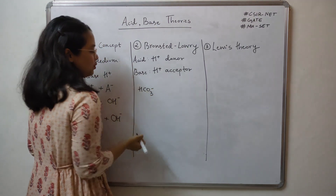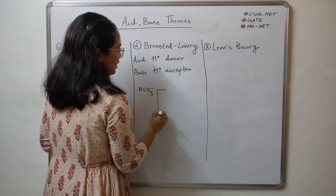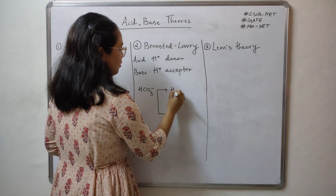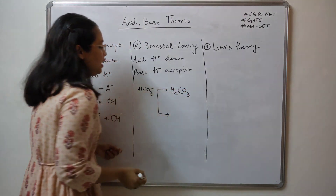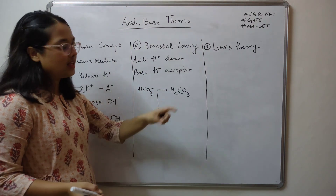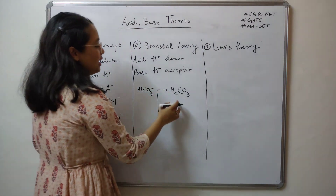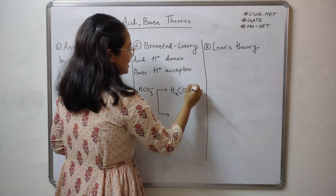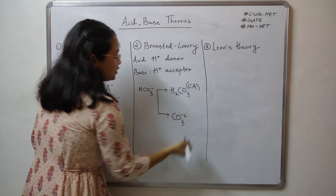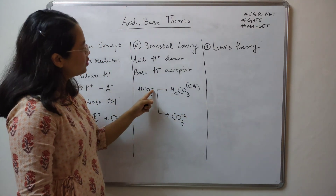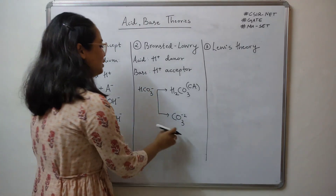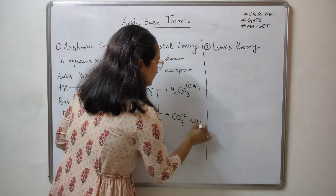Another example: HCO3 minus, the bicarbonate ion. If I am adding H+, this will become H2CO3 — it already had a negative charge, so adding a proton cancels that out and overall it will be neutral. If I am adding a proton, this becomes the conjugate acid. If I remove H+, this will become CO3 2 minus — why minus 2? Because it was already minus and removing a positive charge increases the negative charge. This becomes your conjugate base.